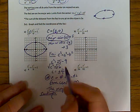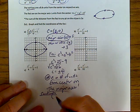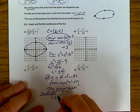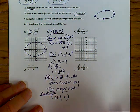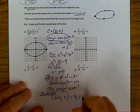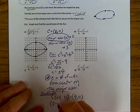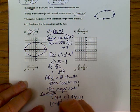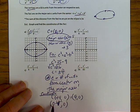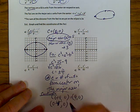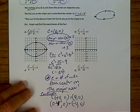So the coordinates of the foci — when they ask for the coordinates — you're going to add four to zero: (0 + 4, 0) which is (4, 0). And then you subtract the four from the x part as well: zero minus four is −4, so the second focus is (−4, 0).